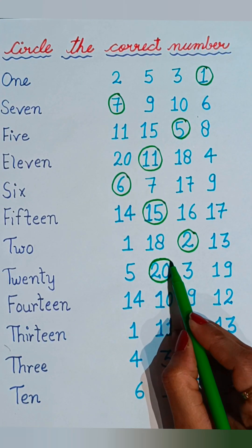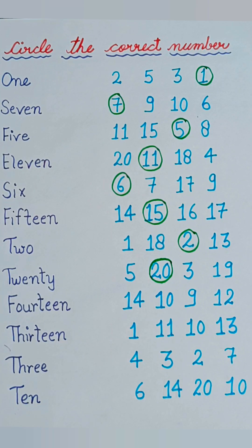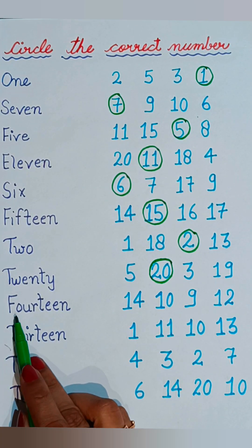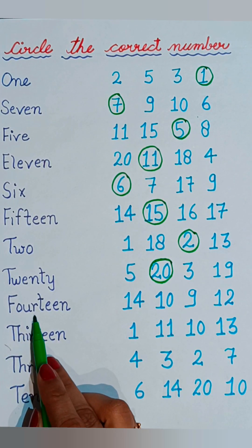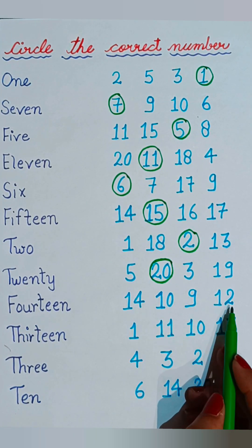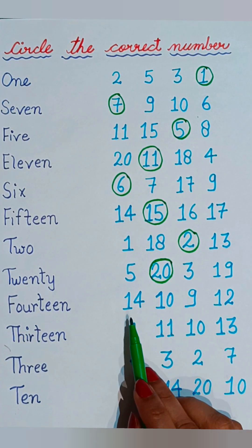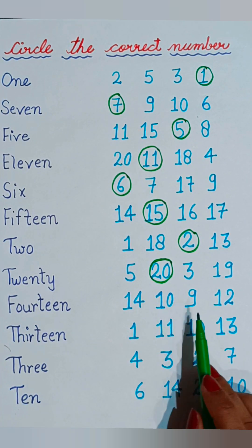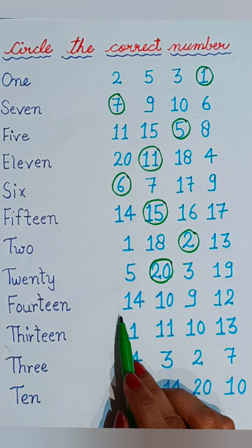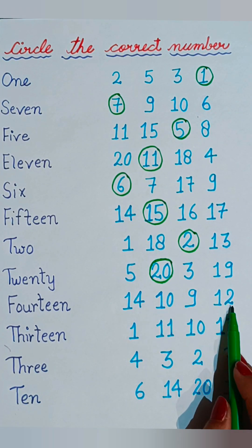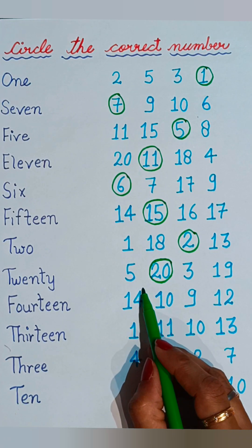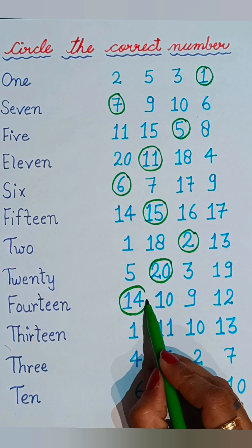See the next one: F-O-U-R-T-E-E-N, fourteen. See the numbers: fourteen, ten, nine, and twelve — four numbers are given. We have to circle the number fourteen. This is the correct one.